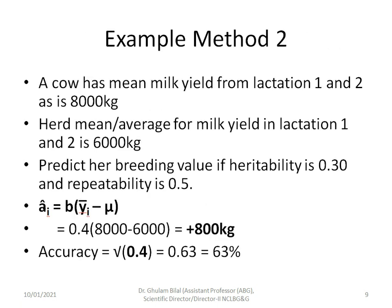Example for Method 2: a cow has mean milk yield from lactations 1 and 2 of 8,000 kg, and the herd average is 6,000 kg. Predict her breeding value if heritability is 0.3 and repeatability is 0.5. â_i = B × (ȳ_i − µ), where B = 0.4. The EBV is +800 kg and accuracy = √B = 63%.